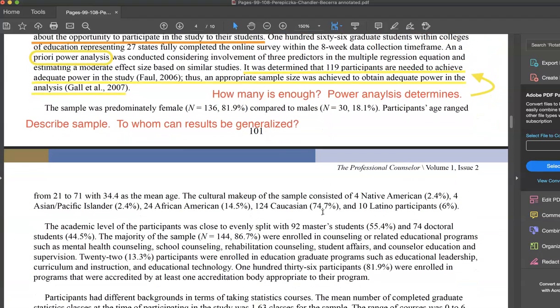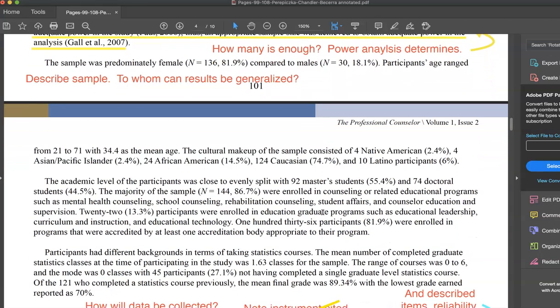Then they go on to describe the sample and who it can be generalized to. And they provided gender, cultural makeup, educational level, what type of program they're enrolled in, the accreditation status, and then a little bit about the statistics courses that they're in and the amount of time they spent there.